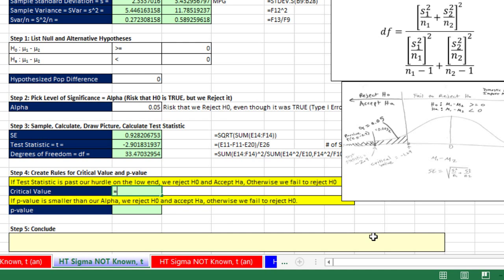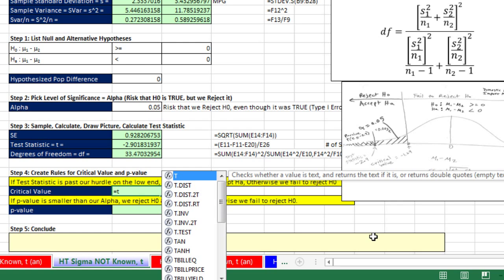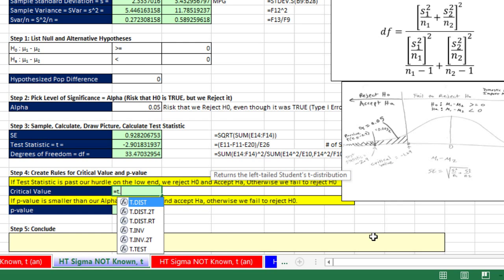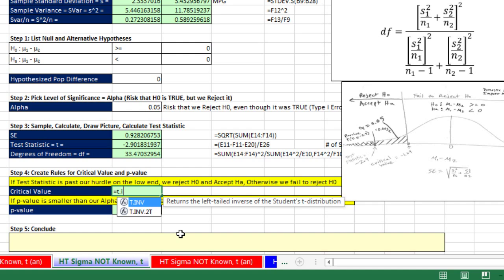So we calculate critical value. Now this is t, and we're trying to get a value. So it's the t, not dist, that's for probability, but t dot inverse. That is for the actual number, our t. The probability, remember this is on the low end, so we take our whole 5%. These functions always go from negative infinity up to whatever point we want. Comma, and there's our degrees of freedom. It will truncate that, meaning it will take just the 33. Close parentheses. Control Enter.